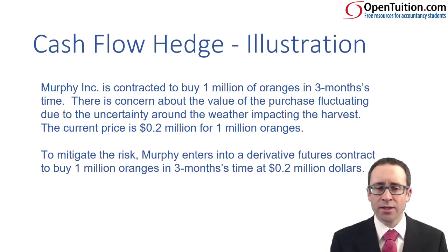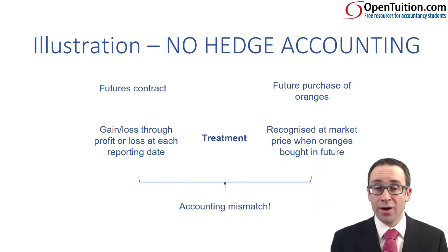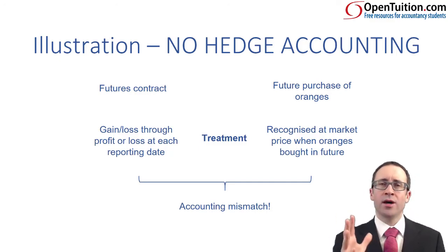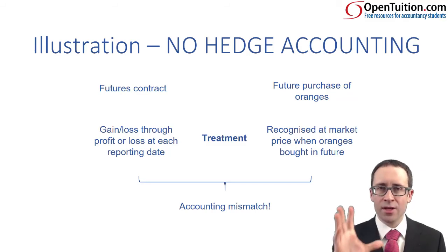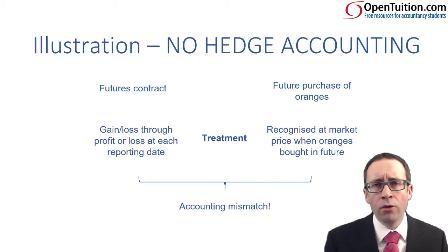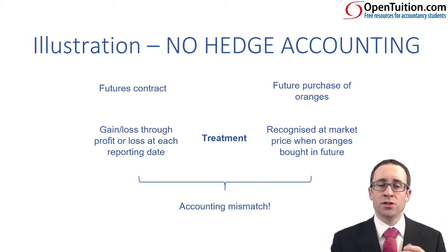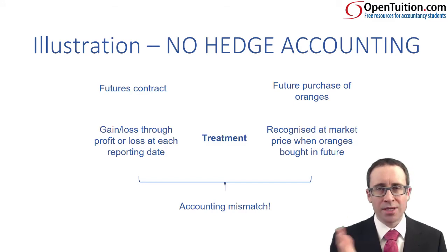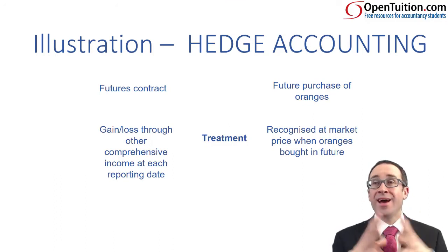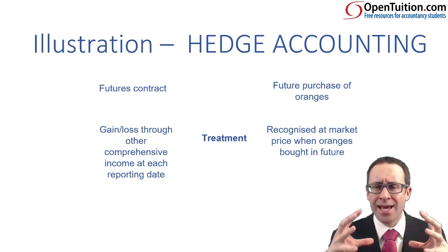Our fear is of a price rise. Let's think about it with no hedge accounting first. The purchase of the oranges is recognised on the transaction date when you actually buy them in the future. But with the futures contract, the normal rules for a derivative are that you have gains and losses through profit or loss — and we said there was an accounting mismatch. So now we're going to look at it as if it is designated as a hedge.